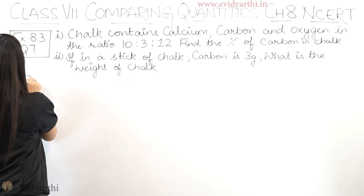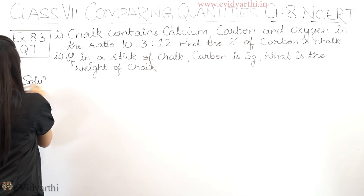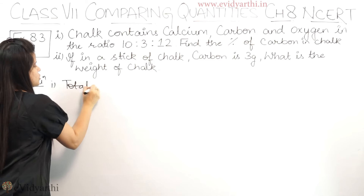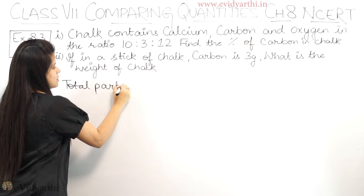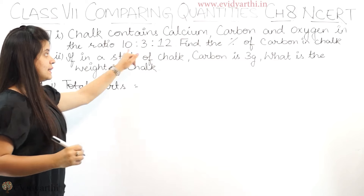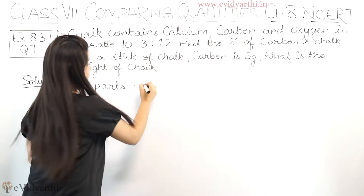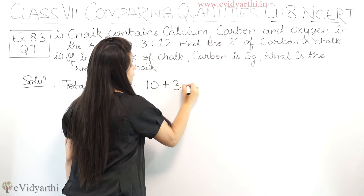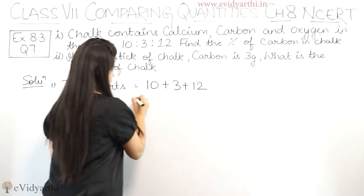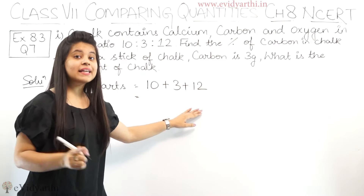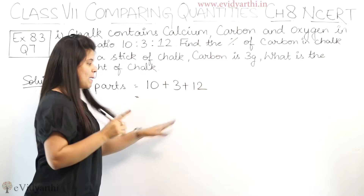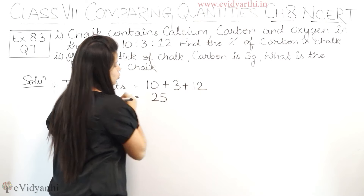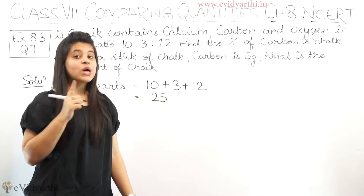The first thing we do is find the total parts. हम लोग total parts find करेंगे. Total parts will be equal to 10 plus 3 plus 12. इन तीनों को add करके total parts मिलेंगे. That will be 25.